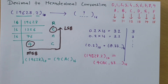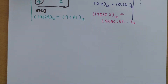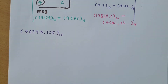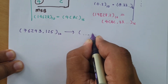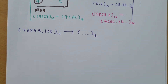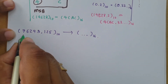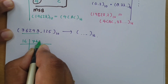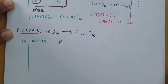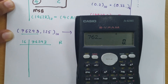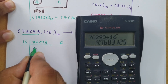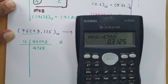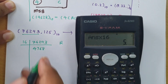Let us do one more example for clarity. The new number to convert into hexadecimal is 76293.125. We bisect it into integer and fractional parts. Dividing 76293 by 16: the result is 4768 with remainder 5. So the first remainder is 5.